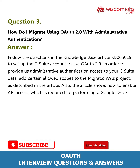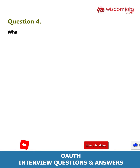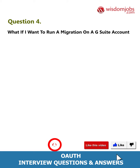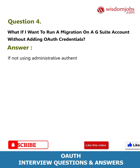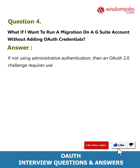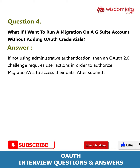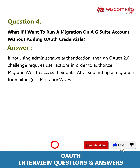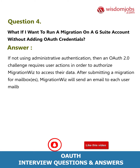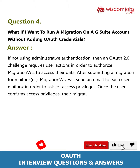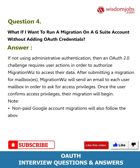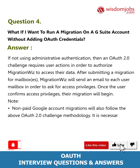Question 4: What if I want to run a migration on a G Suite account without adding OAuth credentials? Answer: If not using administrative authentication, then an OAuth 2.0 challenge requires user actions in order to authorize MigrationWiz to access their data. After submitting a migration for a mailbox, MigrationWiz will send an email to each user mailbox in order to ask for access privileges. Once the user confirms access privileges, their migration will begin.